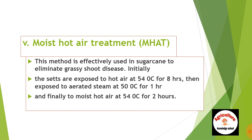In the moist hot air treatment, initially the seeds are exposed to hot air at 44 degrees Celsius for 8 hours, then exposed to aerated steam at 50 degrees Celsius for 1 hour, and finally to moist hot air at 54 degrees Celsius for 2 hours. This method is called moist hot air treatment.